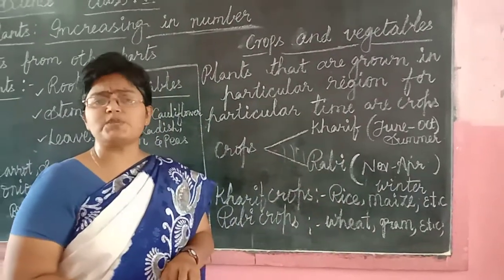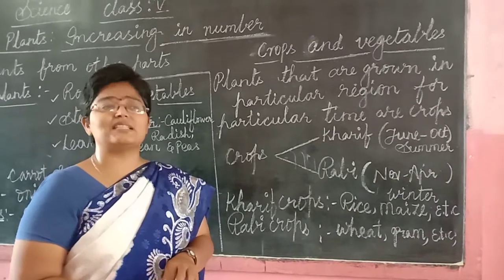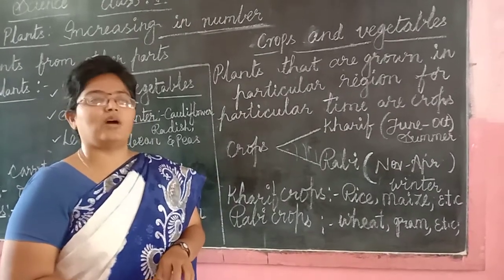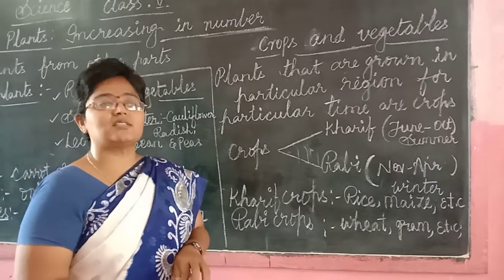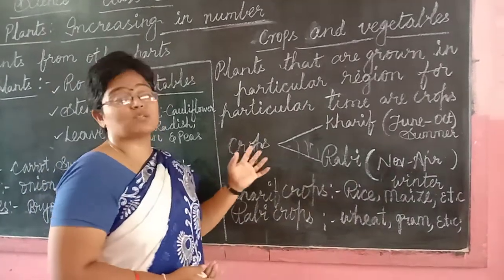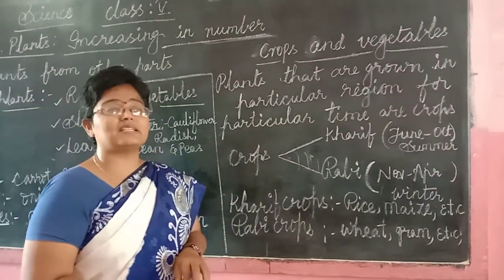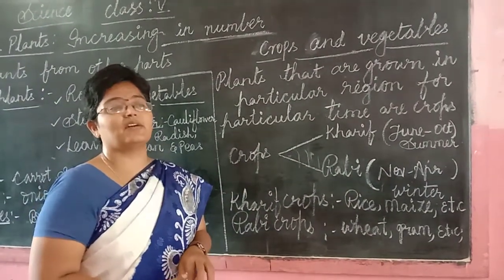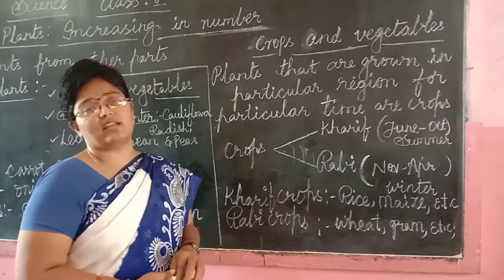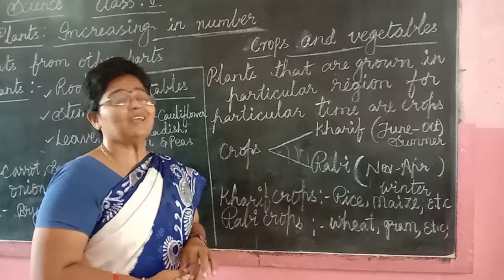Do all crops grow in the same type of soil or in the same season? No. Crops are to be grown in a particular place where there are suitable conditions — suitable soil for suitable growth of the crops.